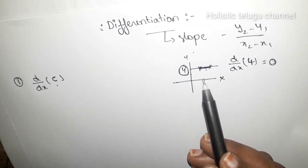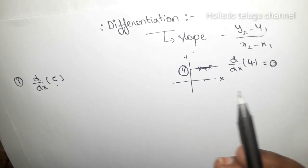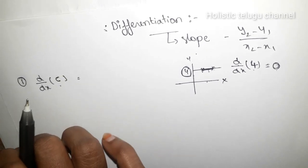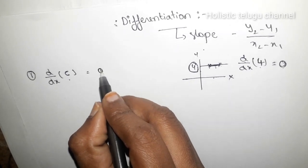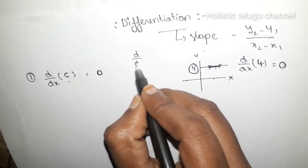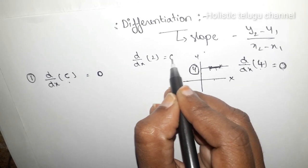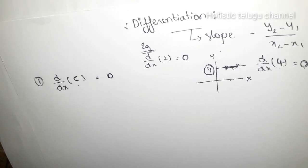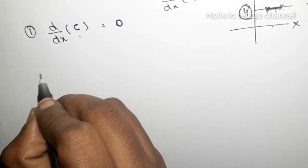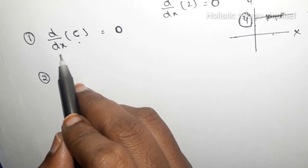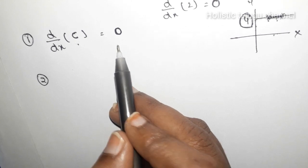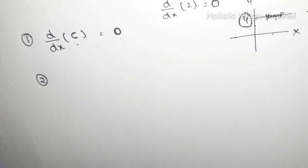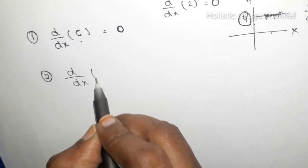The slope is parallel to the x-axis, and the differentiation of a constant is 0. The slope parallel to the y-axis is 90 degrees. So d by dx of a constant value is 0. For example, d by dx of 2 — the constant value is 0.